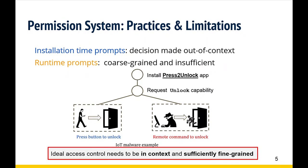Here we show an example that further explains how current mechanisms fail in the IoT scenario. An app called press-to-unlock lets the user unlock their door by pressing a button on their phone. Once the user grants the unlock capability to the app, embedded malicious logic can abuse this permission to silently open the door upon receiving a request from the attacker. The context of the benign and malicious paths are different, and our goal is to defeat such attacks. An ideal access control needs to be in-context and sufficiently fine-grained.